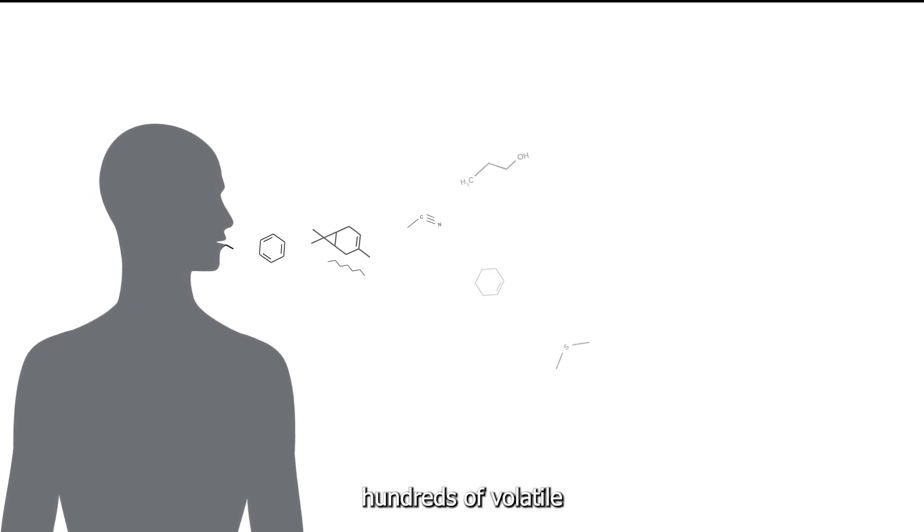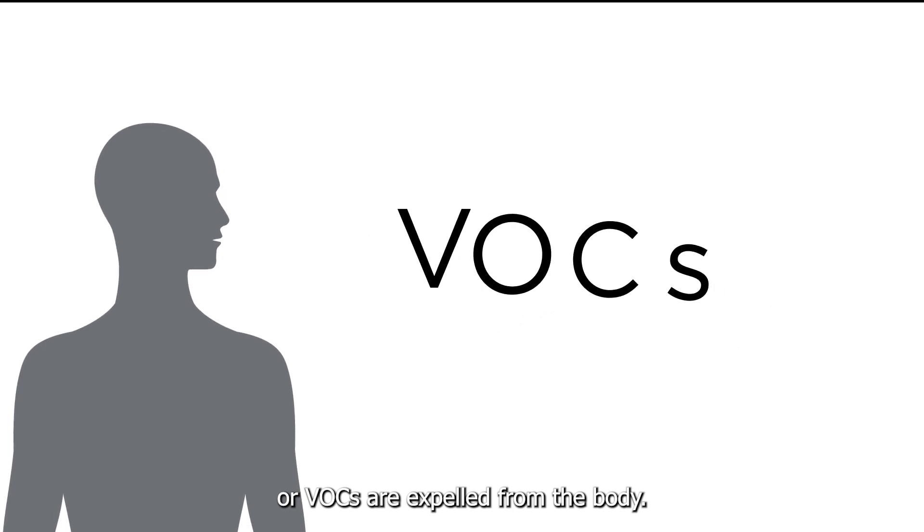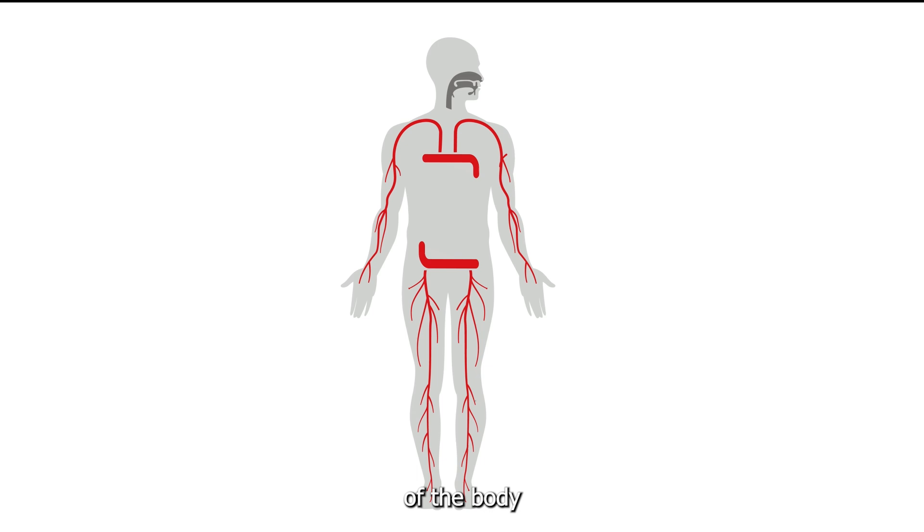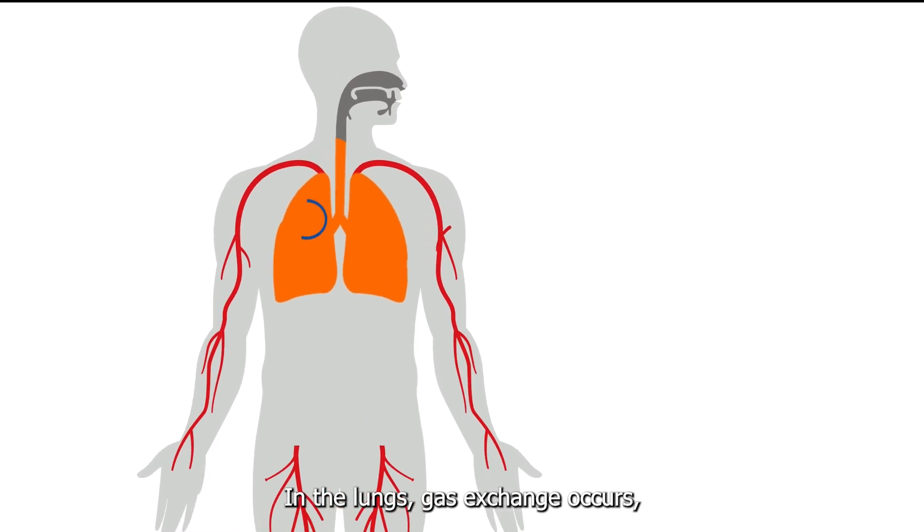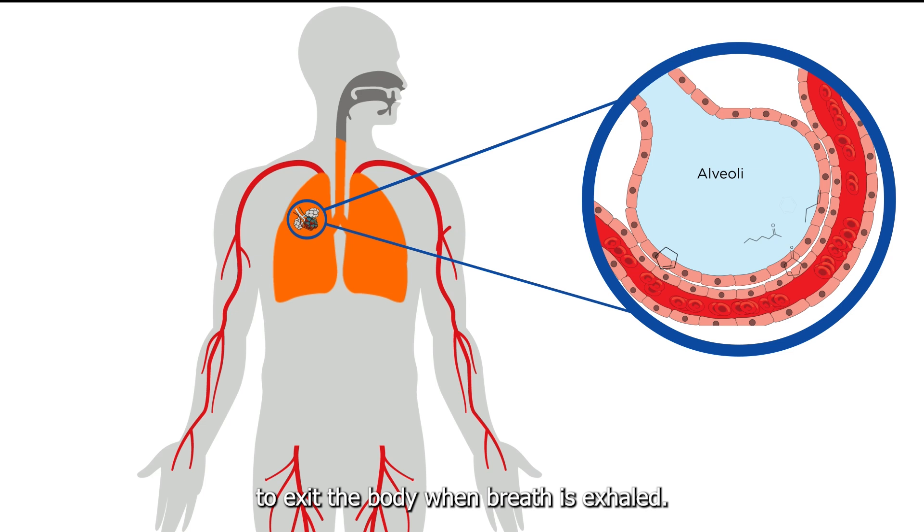As we exhale, hundreds of volatile organic compounds, or VOCs, are expelled from the body. VOCs can originate from various parts of the body and travel through the bloodstream to the lungs. In the lungs, gas exchange occurs, allowing VOCs to exit the body when breath is exhaled.